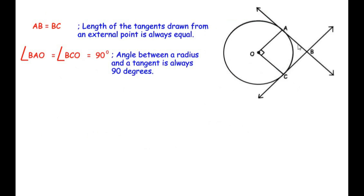In this diagram, B acts as an external point to the circle through which two tangents BA and BC are drawn. Using the two-tangent theorem, AB equals BC. Using the radius-tangent theorem, OA and OC are radii and BA and BC are tangents, so angle BAO equals 90 degrees and angle BCO equals 90 degrees.